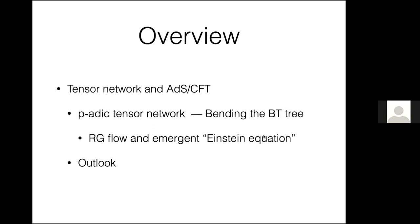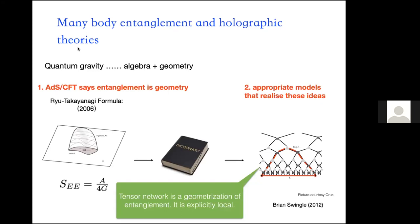Let me start by motivating what we're doing. We're all ultimately interested in building a theory of quantum gravity. When we talk about 'quantum' we're talking about algebra, and gravity is about geometry. So quantum gravity amounts to reading off geometrical data from some algebra. Normally we obtain an algebra from canonical quantization, but that doesn't work here. The AdS/CFT correspondence gives us hope that the algebra appropriate for gravity is encoded in some conformal field theory.